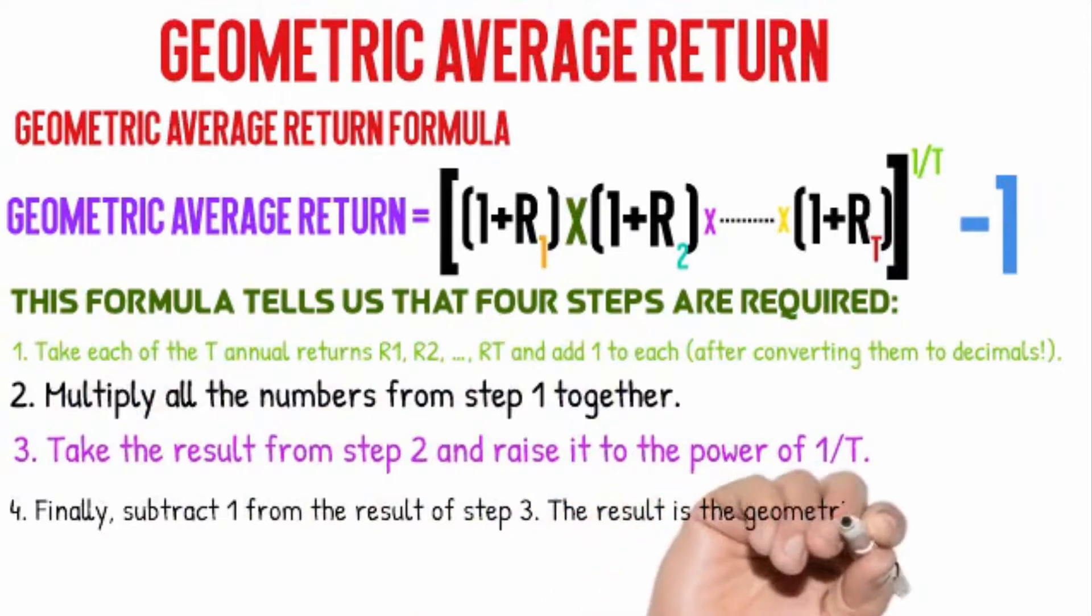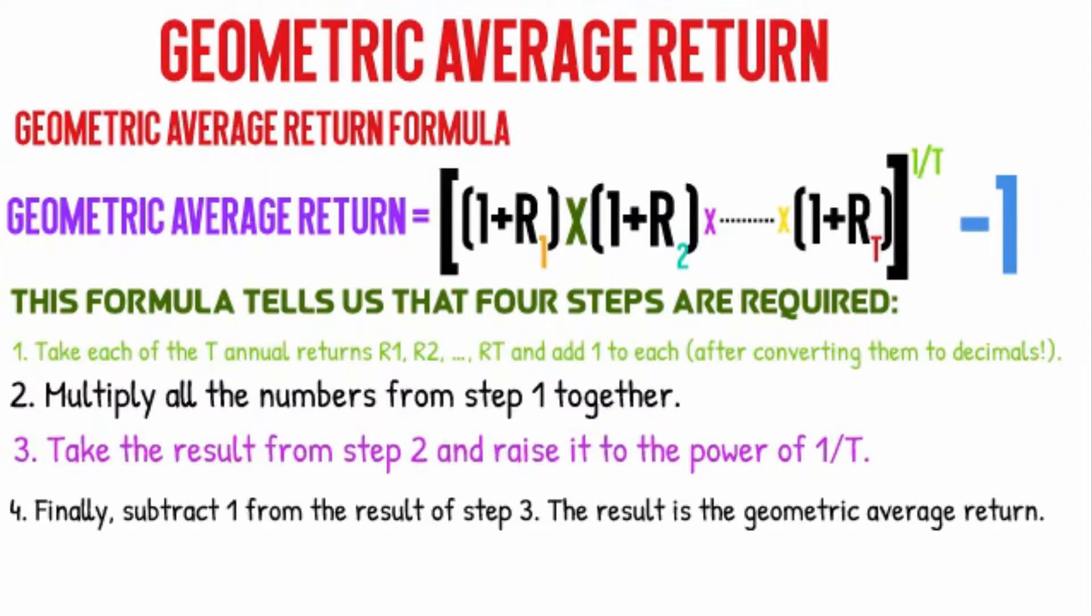Step 3: take the result from step 2 and raise it to the power of 1 over t. Step 4: finally, subtract 1 from the result of step 3. The result is the geometric average return.